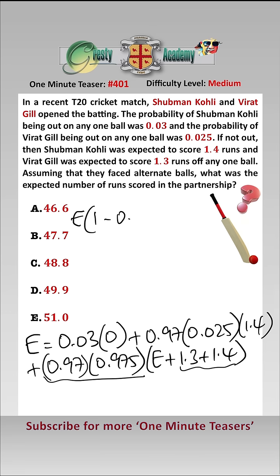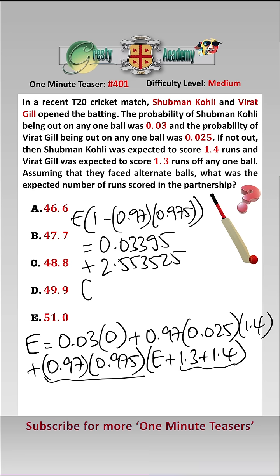We get that E times 1 minus 0.97 times 0.975 equals 0.033 plus 2.553525, i.e., we have that E is equal to 2.587475 over 0.05425, which equals 47.695, which rounded up is 47.7.